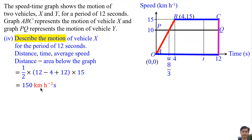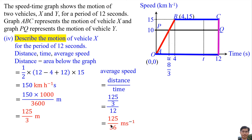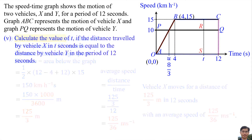Converting kilometers to meters and hours to seconds, the distance is 125/3 meters. The time is 12 seconds. Average speed equals distance divided by time: (125/3) divided by 12, giving 125/36 meters per second. In conclusion, vehicle X moves a distance of 125/3 meters in 12 seconds with an average speed of 125/36 meters per second.